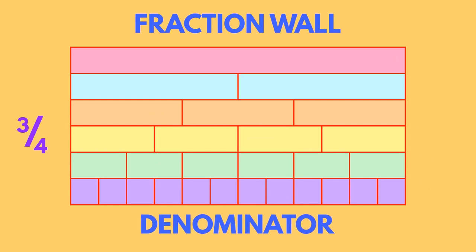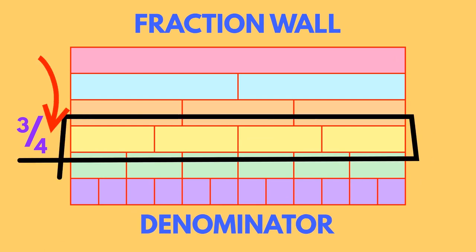First, the denominator. It's always on the bottom and tells us how many equal pieces a whole is divided into.